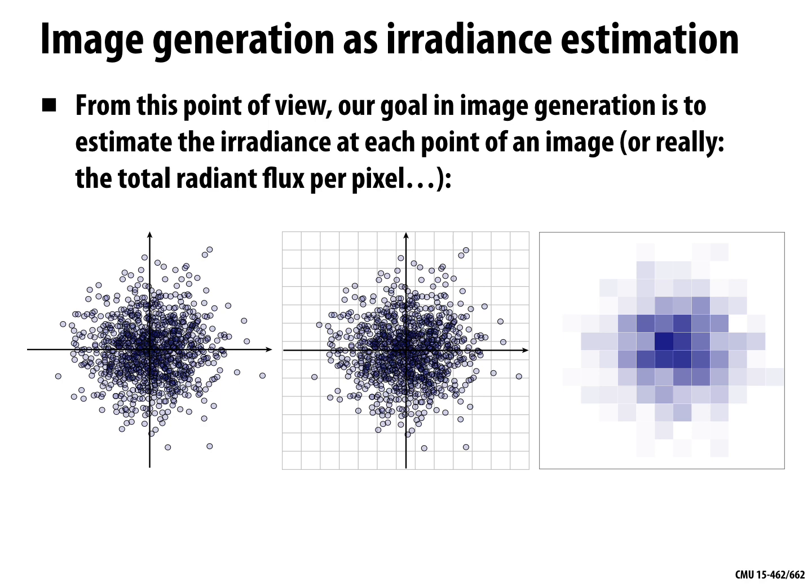Our goal in image generation is to estimate the irradiance — the hits per unit area per second — at each point of an image. Imagine on the far left all the photons hitting our camera sensor; in the middle, where the pixels are; and on the right, the information we actually record: within each pixel, how many hits per second did we get?